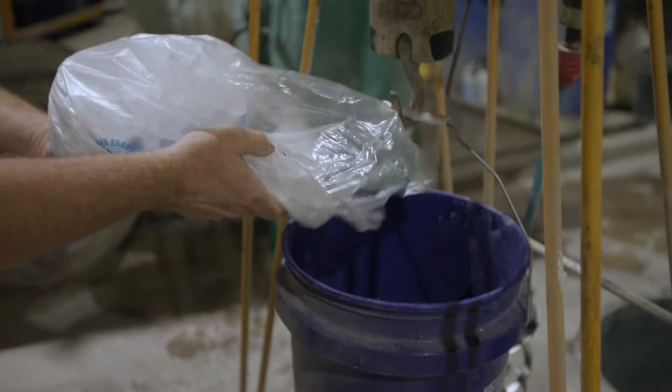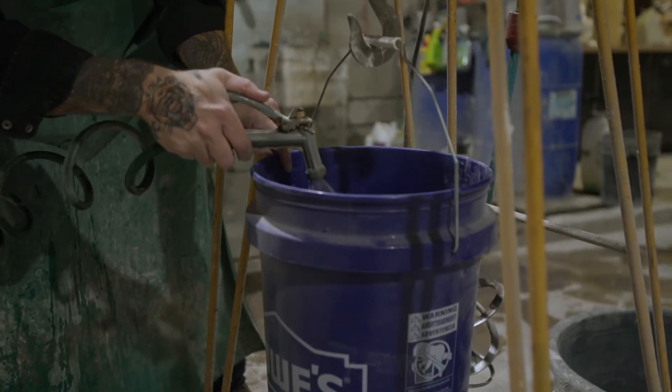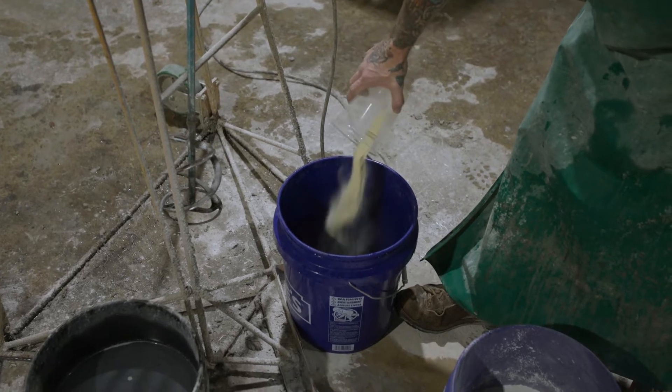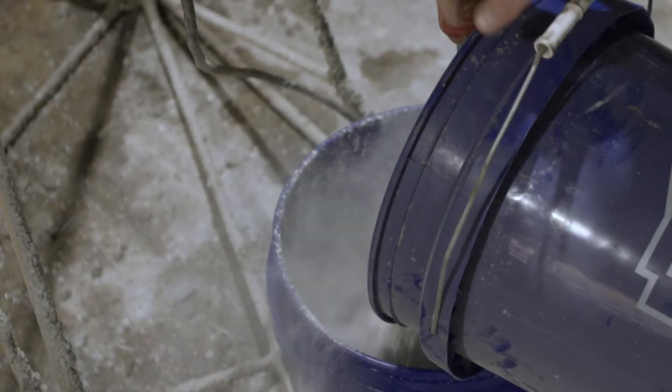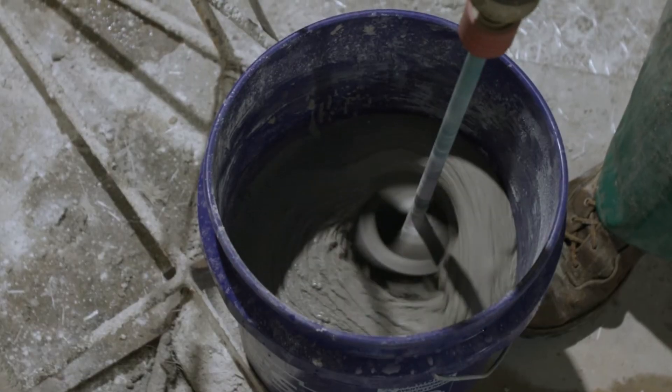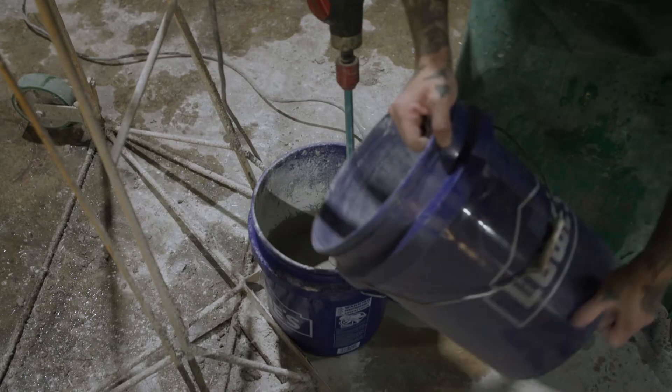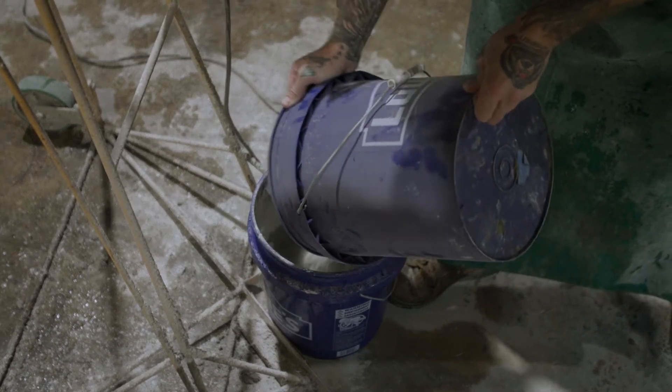Pour ice water into the mix bucket, add the best plasticizer, then add three quarters of the dry mix and blend until wet. Add the remaining dry mix and blend thoroughly.